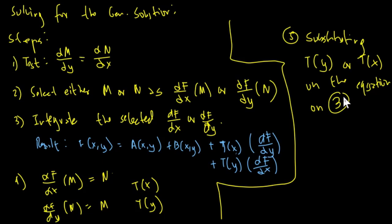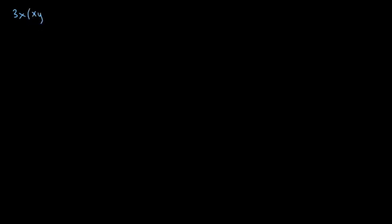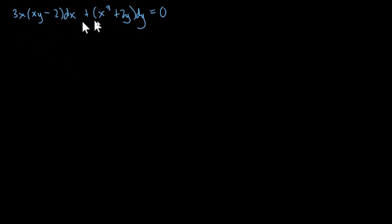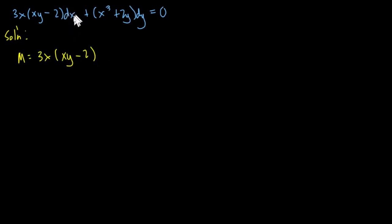Now we will be solving some examples. We have the equation: (3x²y − 6x) dx + (x³ + 2y) dy = 0. We have this given differential equation of order 1, which we are going to solve for the general solution. First, we will test if this is an exact differential equation, identifying which is our M and our N. By inspection, M = 3x²y − 6x and N = x³ + 2y.